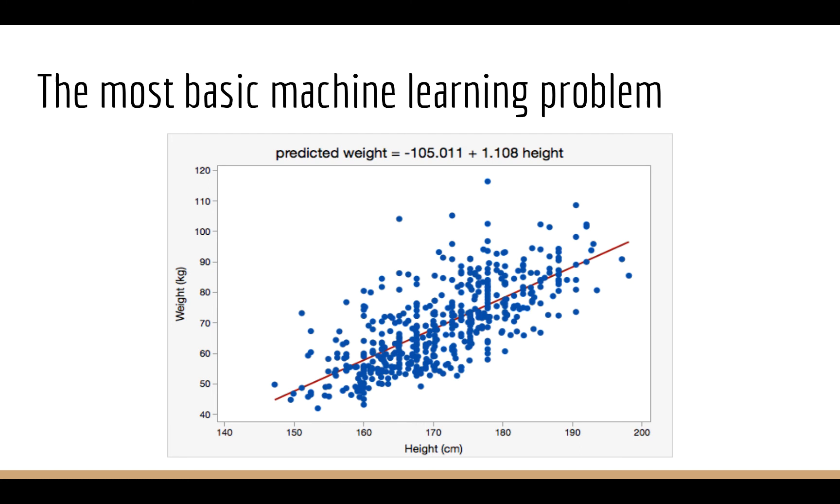Of course there are exceptions to this, such as a very tall skinny person or a very short and stout person. That's why these points don't fall on an exact line but they generally follow the same pattern. Our goal is to find the line that best fits to our data. We call this the line of best fit.